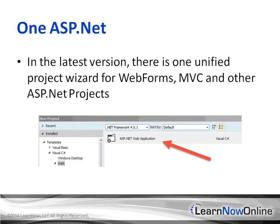If you want to create a Web Forms application, an MVC application, a Web API, or other types of ASP.NET applications, when you click on New Project from the menu, you'll come over to the Web option, and then you'll be given one choice of ASP.NET Web Application. From there, once you click that, you'll have the option of selecting the various components you want to configure — whether you just want Web Forms, MVC, Web API, or what have you.